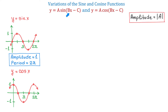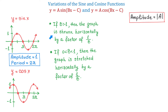Number b causes the graph to stretch or to shrink horizontally. When b is greater than 1, then the graph is shrunk horizontally by a factor of 1 over b. This means that if the basic sine function has the period of 2 pi, then when b is greater than 1, the period of the function will be less than 2 pi. And in the second case, if b is between 0 and 1, then the graph is stretched horizontally by a factor of 1 over b, and the period will be greater than 2 pi.